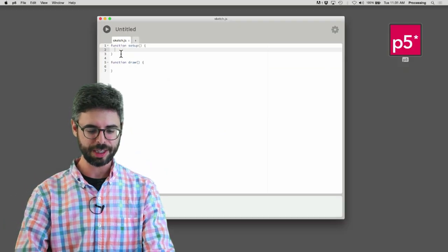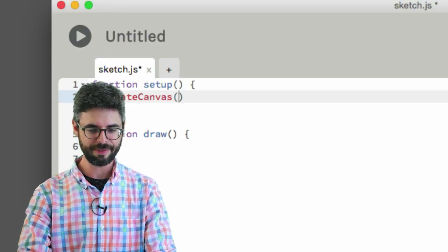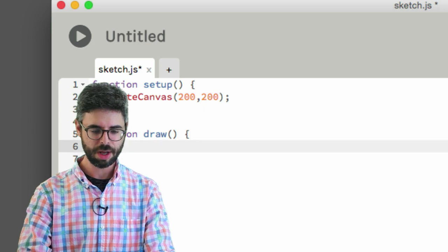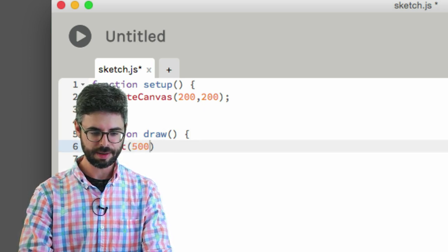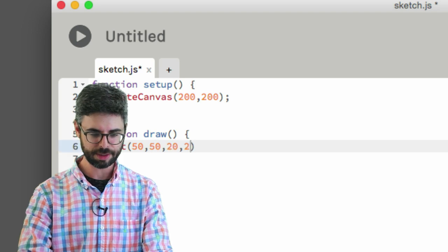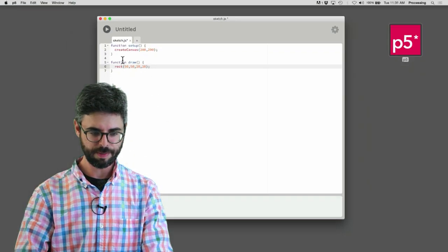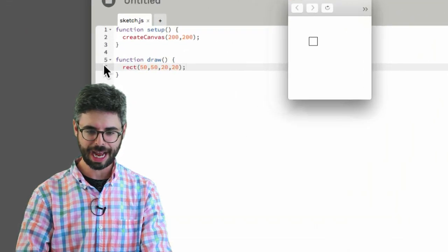One thing I'm going to do is I'm going to type in create canvas. And then down here into draw, I'm going to type rectangle, and I'm going to type some other numbers. And then I'm going to zoom back out and hit play. And we can see here, look what's happened.